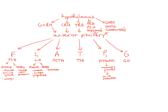Let's look at prolactin. Starting at the hypothalamus, we have two hypothalamic hormones: prolactin-releasing hormone and prolactin-inhibiting hormone, which is the same thing as dopamine. If we want the anterior pituitary to release prolactin, the hypothalamus secretes prolactin-releasing hormone into the portal system, which travels to the anterior pituitary and tells it to release prolactin. Prolactin then travels to the mammary glands and stimulates them to produce milk.